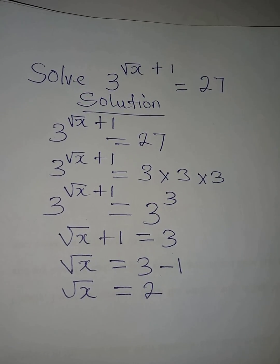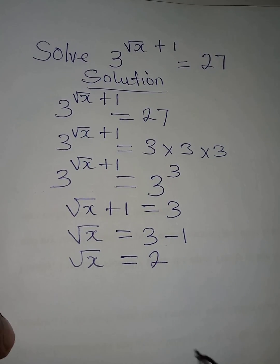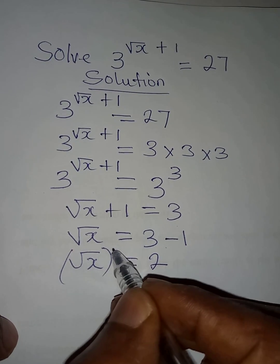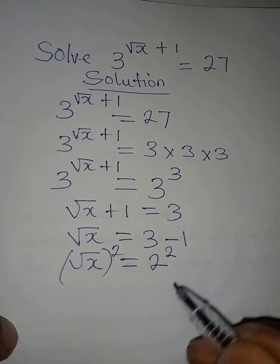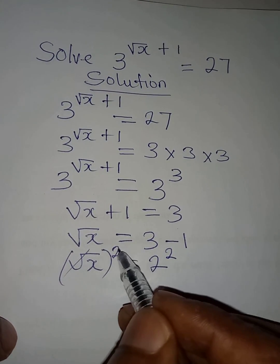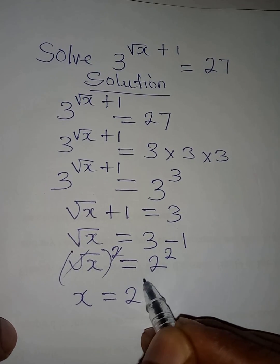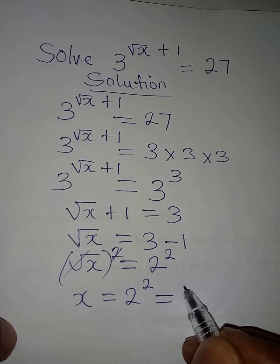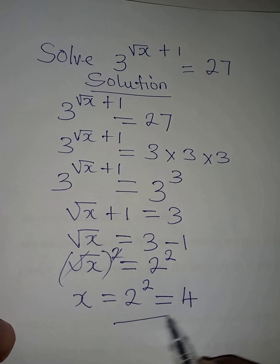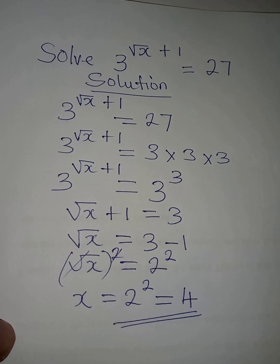And then for me to eliminate the square root, I will have to square both sides so that the square root and the square will cancel each other. And then x will be equal to 2 squared, and remember 2 squared is 4, meaning 2 times 2. Thank you for watching.